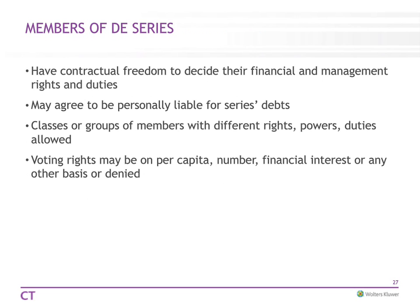Members of a series have contractual freedom to decide their financial and management rights and duties. They can agree to be personally liable for the debts of a series. For example, if you need a mortgage for the property you want to buy and you tell the bank the series is liable, the bank may still want you to agree to be personally liable as a condition of the loan. Voting rights can be spread out as well.